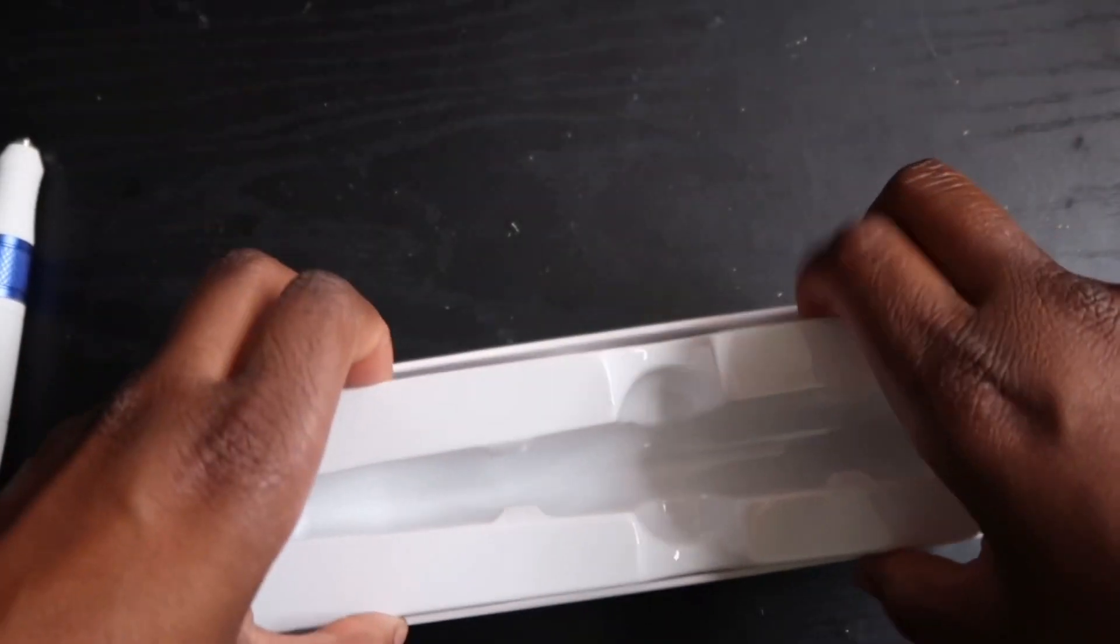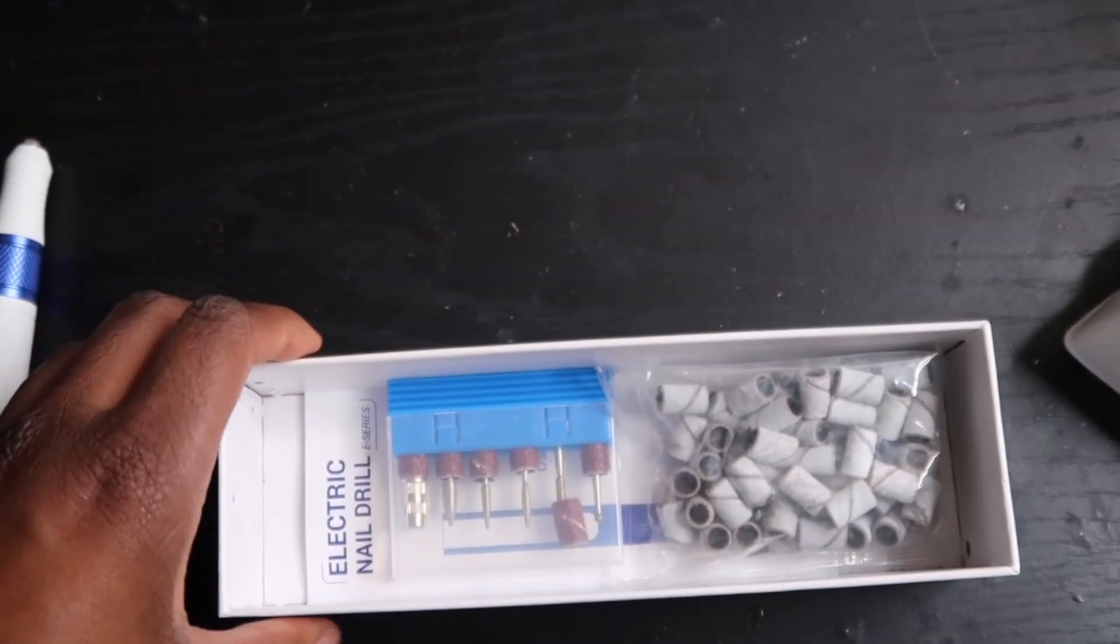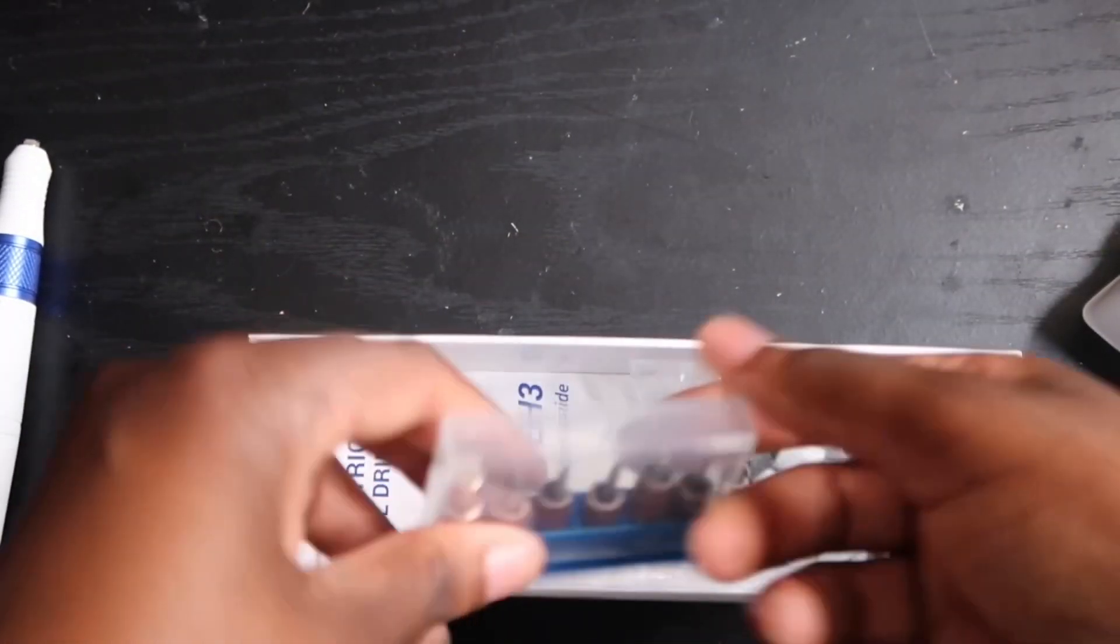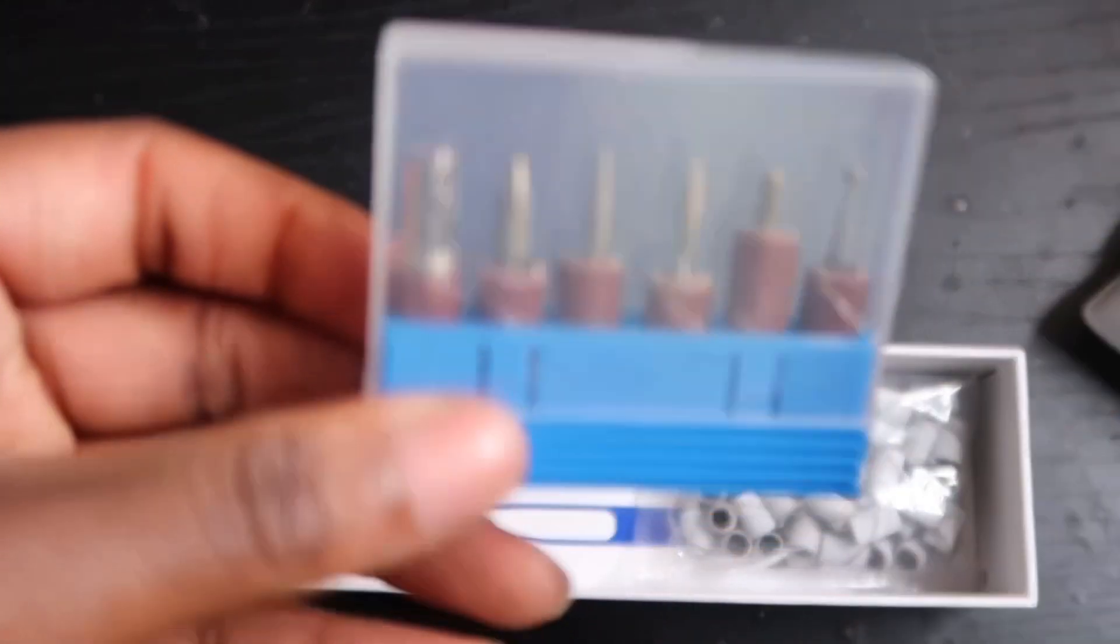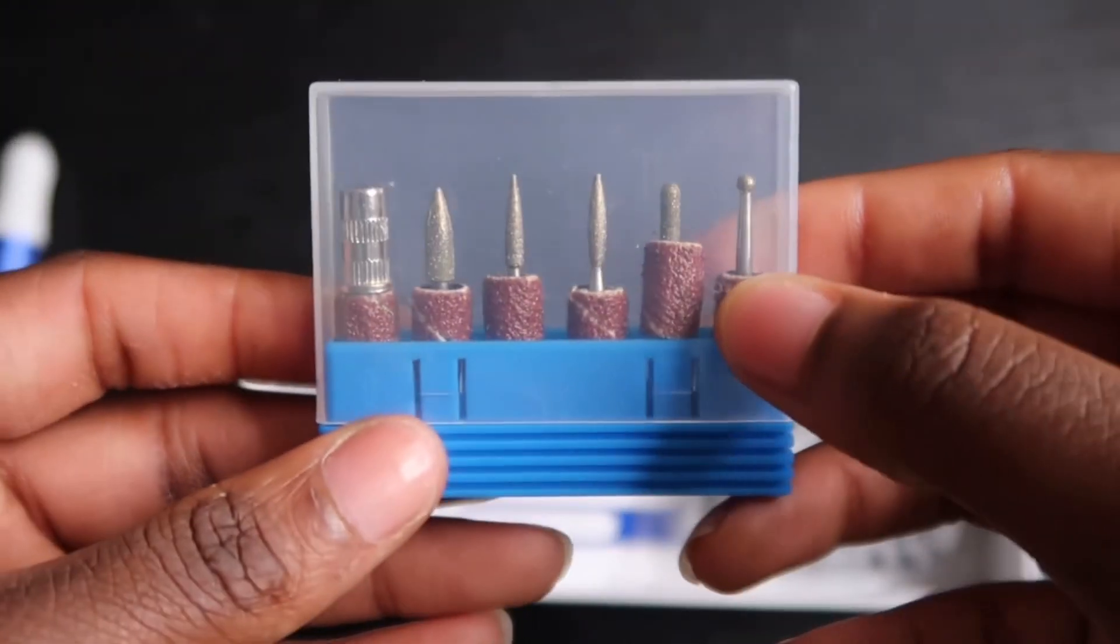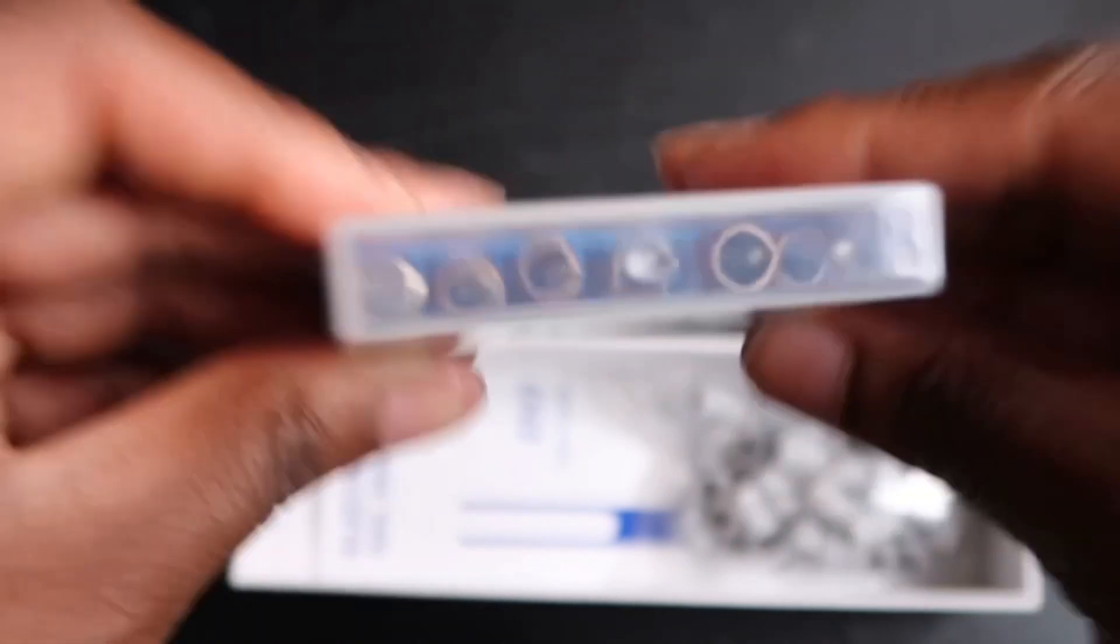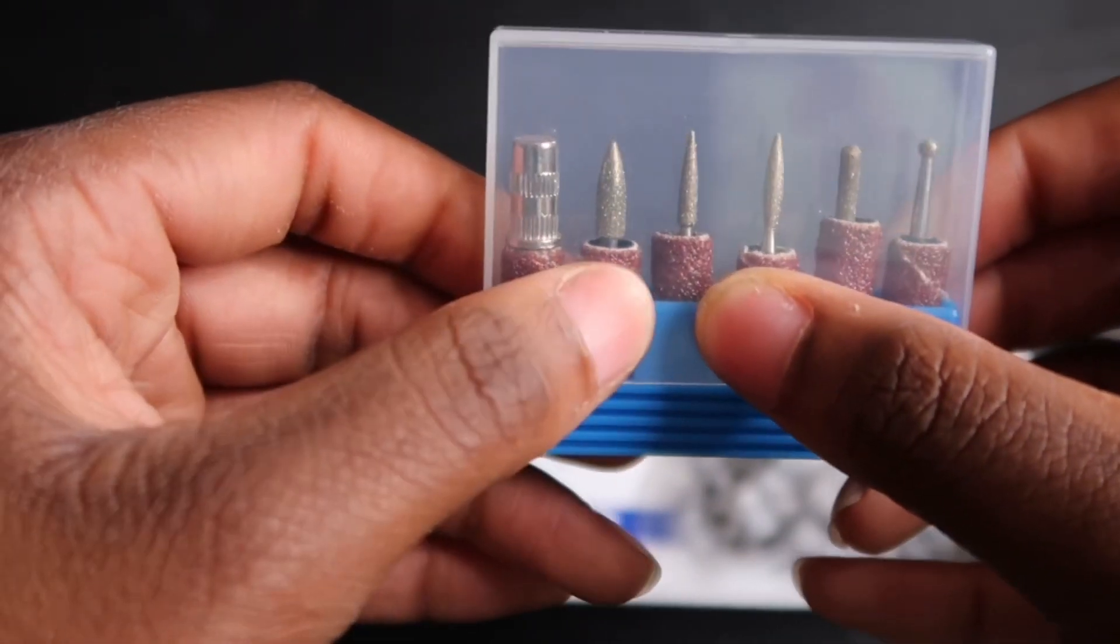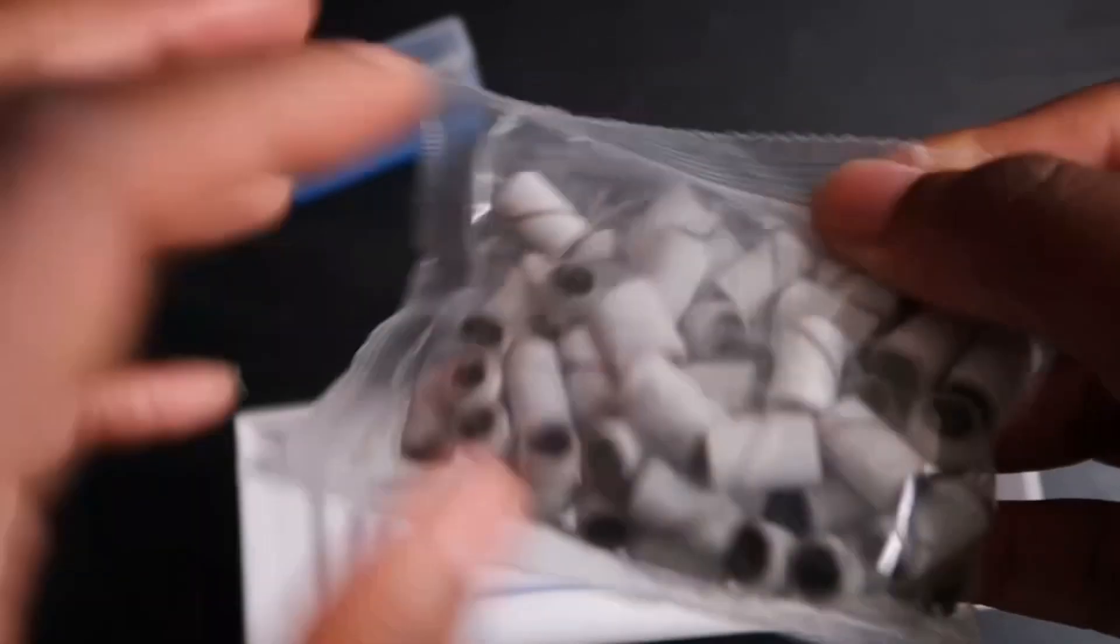Now let's actually get into what else came in this packaging. So it comes with the basic nail drill bits that you guys can see right here that majority of nail drills come with, like a ball bit, the cuticle bit, the mandrel bit, and a flame bit, etc. And then it also comes with 180 grit sanding bands.